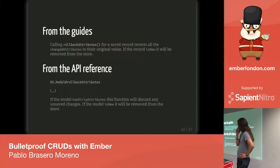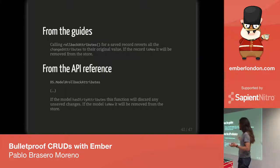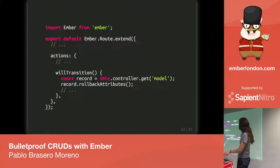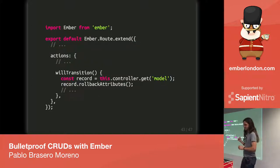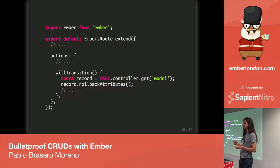Something that annoys me slightly about rollbackAttributes is the name: if you're rolling back attributes on an existing record the name works well, but on a newly created record that is also going to be dropped from the store, rollbackAttributes doesn't quite convey the same significance — which is probably one of the reasons I missed it for so long. But it's on the guides and the API reference now and it's the accepted way to do it.